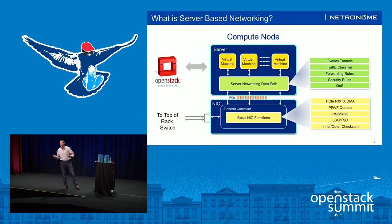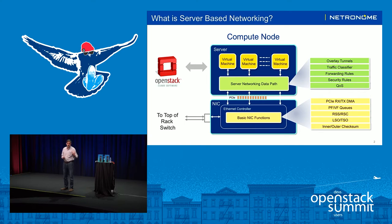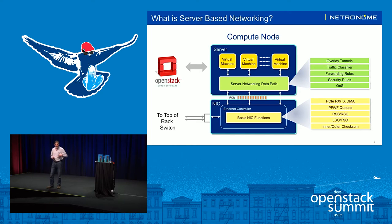In the compute node, you have a CPU that's running your virtual machines. And typically, there's a network interface card plugged in via a PCI slot that performs functions such as talking to your network switch, your top-of-rack switch, through Ethernet ports, and doing some basic functions to the packets — processing them and sending them over the PCI bus, doing some DMA operations.